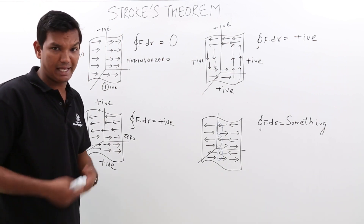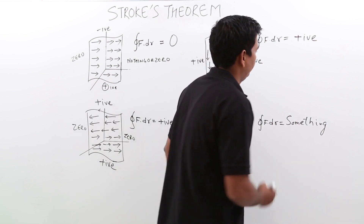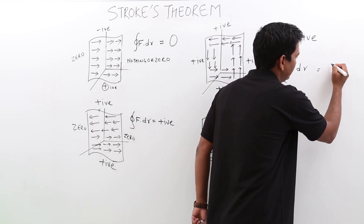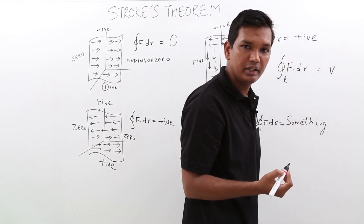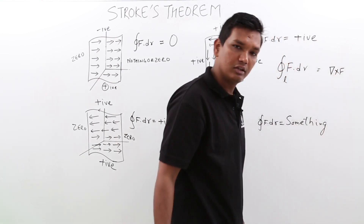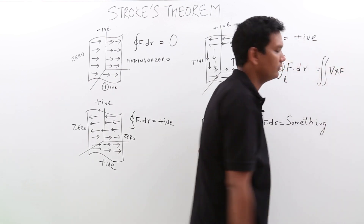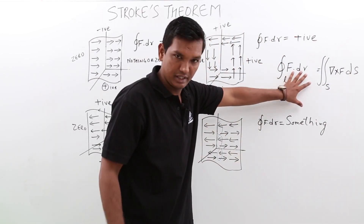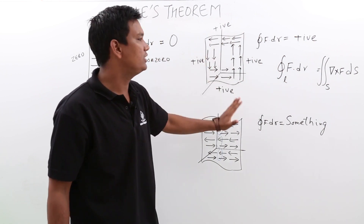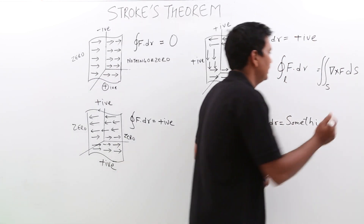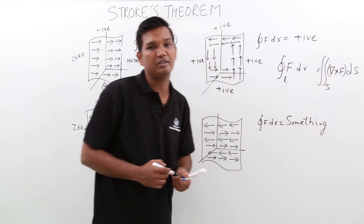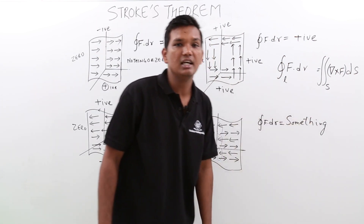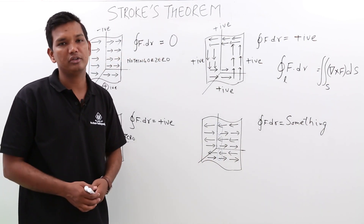So, what I can say is whenever I am trying to calculate f dot dr, it has something to do with the curl, because the quantity only exists if there is a curl and will not exist if there is no curl. So, f dot dr can be related to the curl. F dot dr over the line integral will be nothing but something to do with the curl, which is del cross f. This del cross f is over the surface integral. So, line integral is converted into a surface integral — this is what is called Stokes' theorem. We will see more on this in the next lectures.